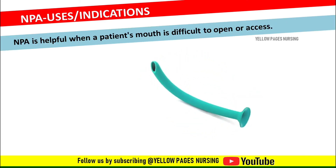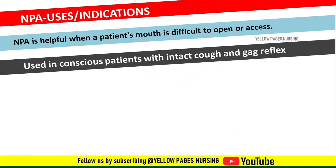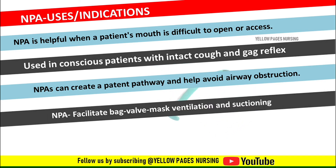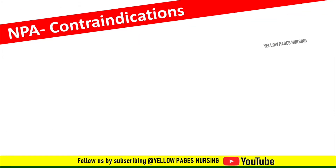The uses or indications of nasopharyngeal airway: it is helpful when a patient's mouth is difficult to open or access. It is used in conscious patients with intact cuff and gag reflex, whereas oropharyngeal airway cannot be used in conscious patients. Nasopharyngeal airways can create a patent pathway and help avoid airway obstruction, facilitate bag-valve mask ventilation, and suctioning.